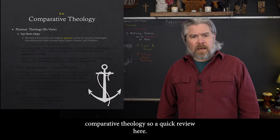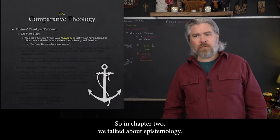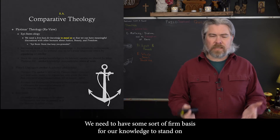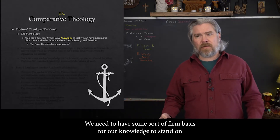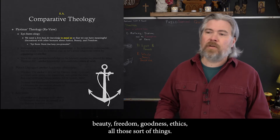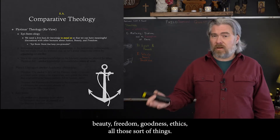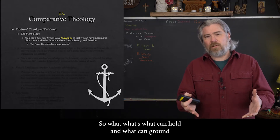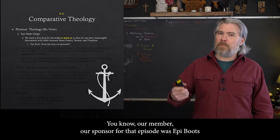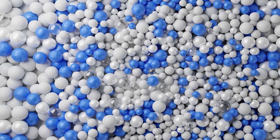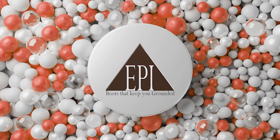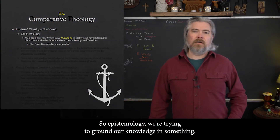Comparative theology. Quick review: in chapter 2 we talked about epistemology — what does our knowledge stand on? What grounds our discourse? We need a firm basis for our knowledge so that we can have meaningful discussions with other humans about things like justice, beauty, freedom, goodness, ethics. So what can hold and ground our knowledge and discourse? Remember, our sponsor for that episode was 'Epi Boots' — boots that keep you grounded. So epistemology: we're trying to ground our knowledge in something.